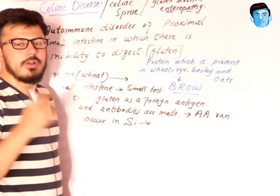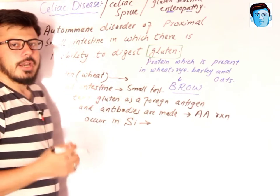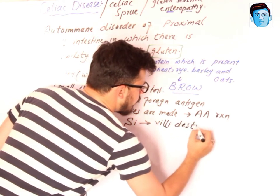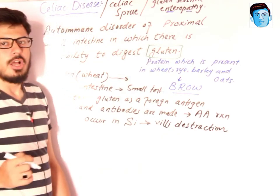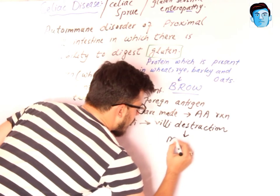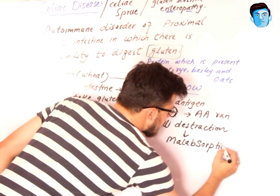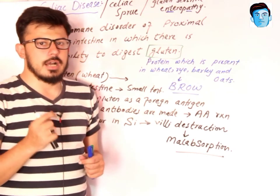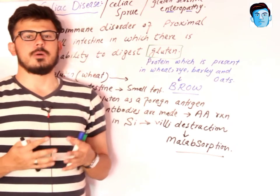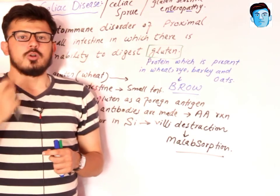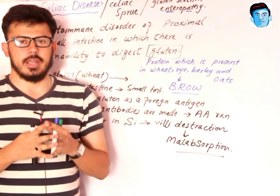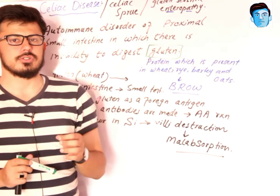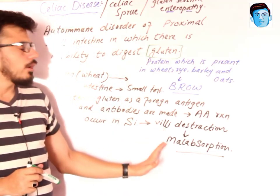An antigen-antibody reaction occurs in the small intestine. The small intestine has very specialized structures called villi. When the antigen-antibody reaction occurs, villi destruction takes place. Since villi are responsible for absorption in the small intestine, their destruction leads to malabsorption — that is why this is also known as malabsorption syndrome.